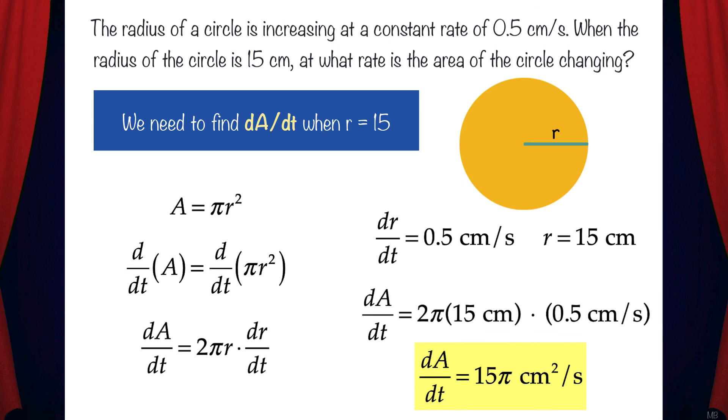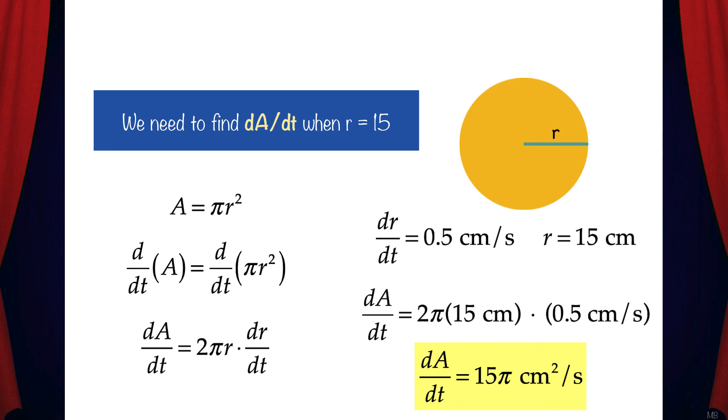What this means is that at the instant when the radius is 15, the area of the circle is increasing at a rate of 15π centimeters squared per second. We got it!